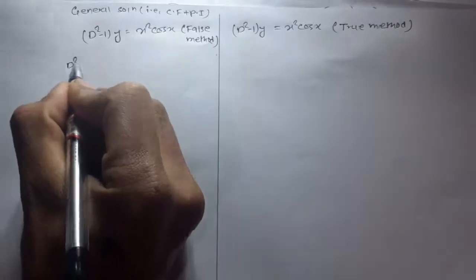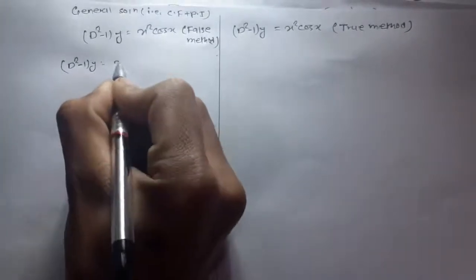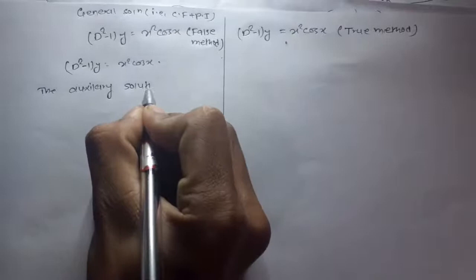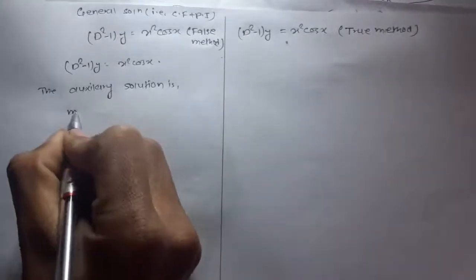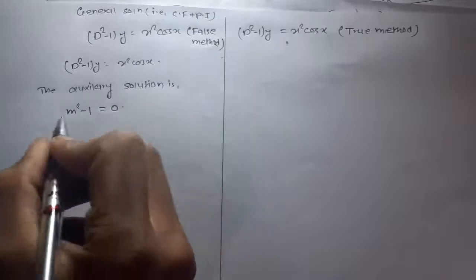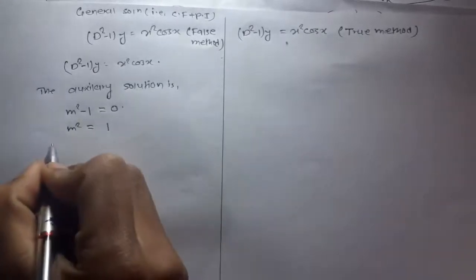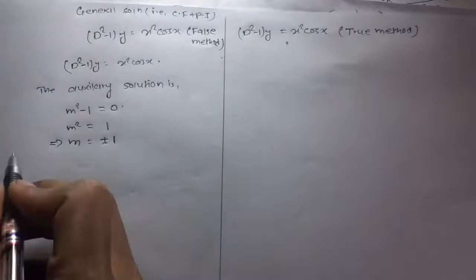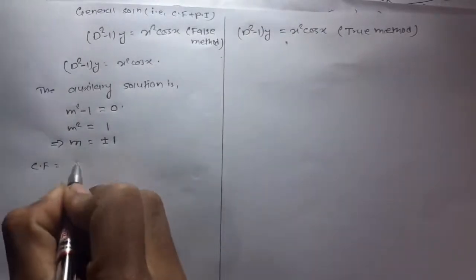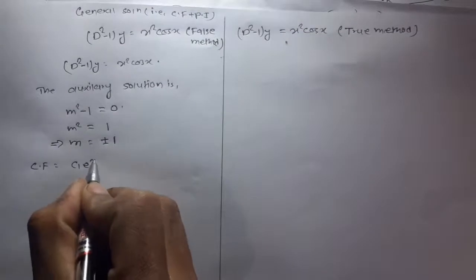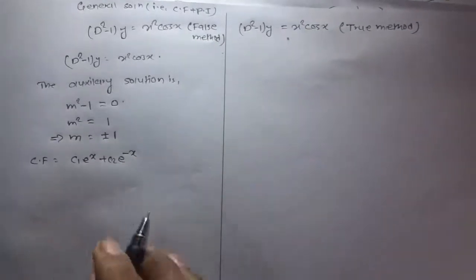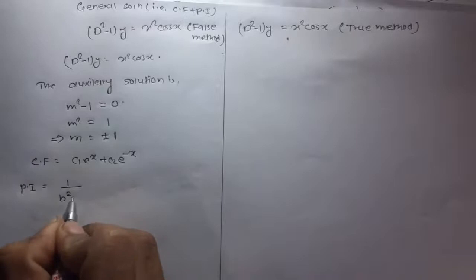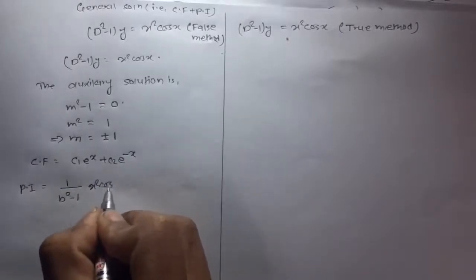The question is (D² - 1)y = x²cos(x). The auxiliary equation is m² - 1 = 0, so m² = 1, which implies m = ±1. The complementary function is CF = c₁eˣ + c₂e⁻ˣ. Now for the particular integral, PI = 1/(D² - 1) · x²cos(x).